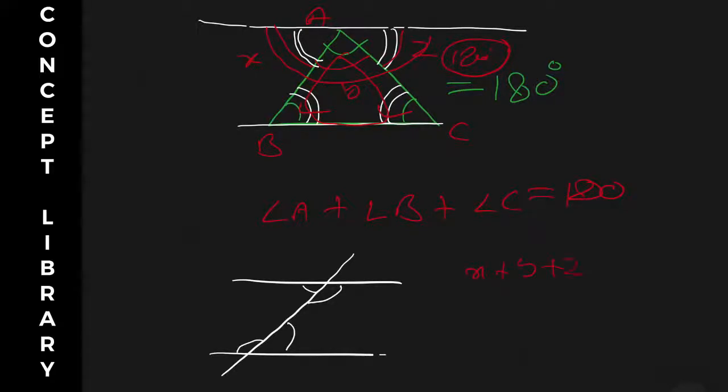We already know angle X is angle B, angle Y is angle A, and angle Z is angle C. So angle B plus angle A plus angle C equals 180. This is how we prove it equals 180.